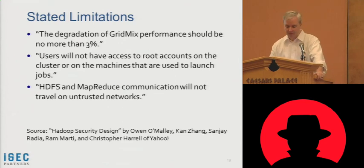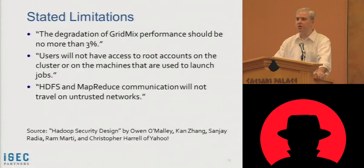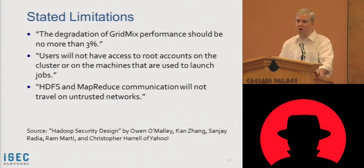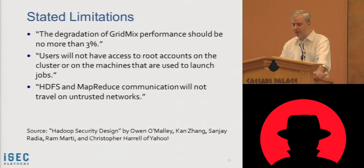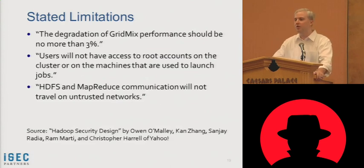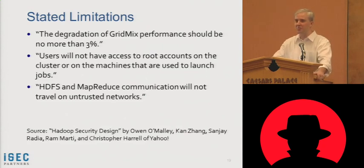Some limitations were stated when this design was introduced, from the Hadoop security design paper released by Owen O'Malley and colleagues at Yahoo. The degradation of grid mix performance should be no more than 3% — they're extremely sensitive to performance hits. Users will not have access to root accounts on the cluster or on machines used to launch jobs, because that symmetric crypto would fall apart if users could steal the shared keys. And HDFS and MapReduce will not travel over untrusted networks. By default, they're using unsecured transports and saying 'trust your network' — essentially what we had to do before.